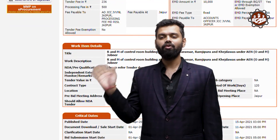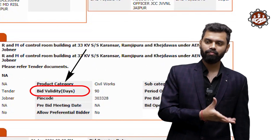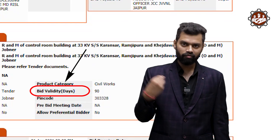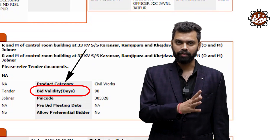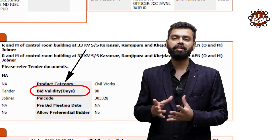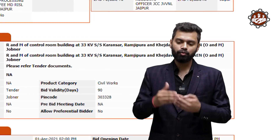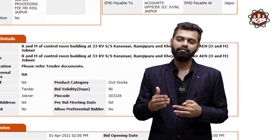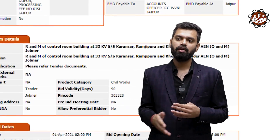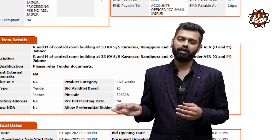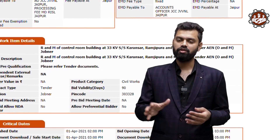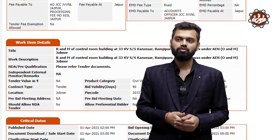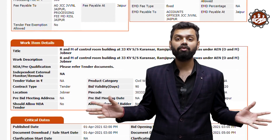The last component is bid validity. Suppose 50 contractors participate in the bidding — all their bids are considered valid for a certain period of time, such as two or three months. After that period, the bids of all 50 contractors are diminished and no longer valid.